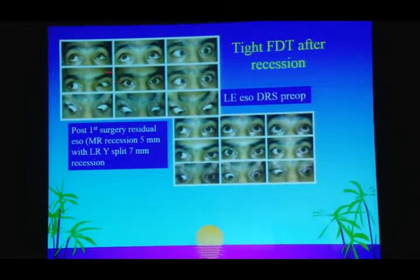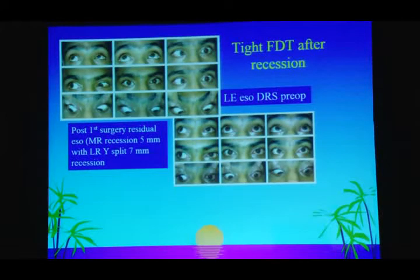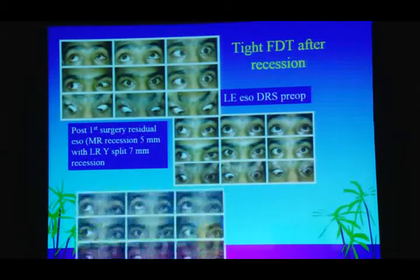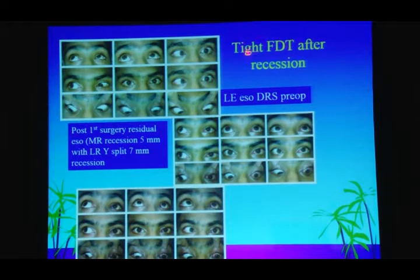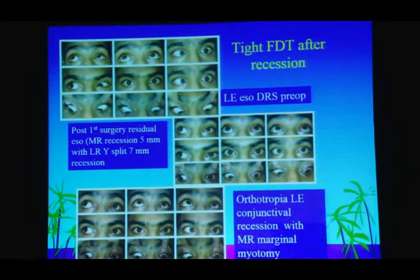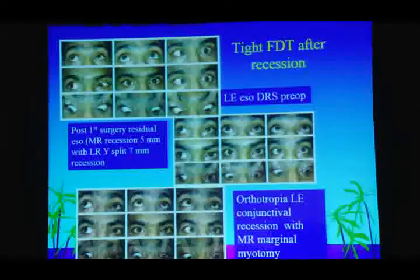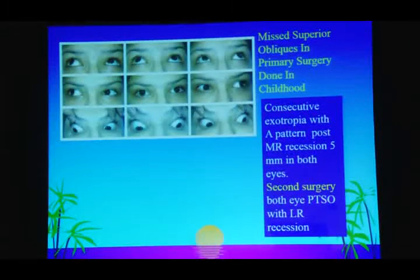This case is an exo-DRS. First surgery was MR recession 5mm and LR Y-split 7mm, but a residual exo remained. The forced duction test was positive, so when it recurs you need to look for a post-duction test. If FDT remains tight despite surgery, revisit the same eye. We performed a conjunctival recession — mainly responsible for the FDT — and a slight marginal myotomy, which did the trick. Adduction also improved compared to before.